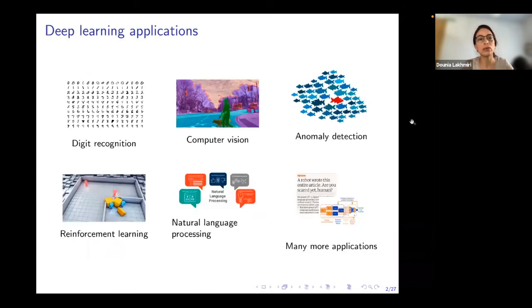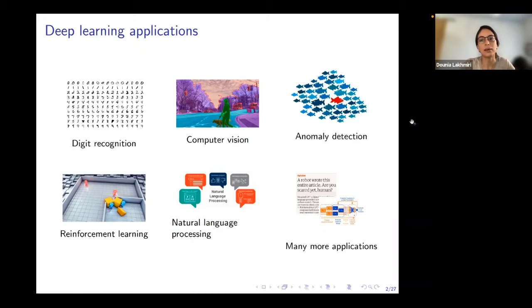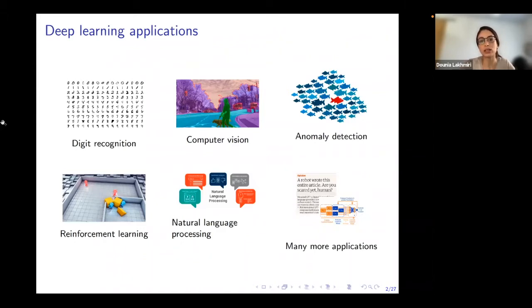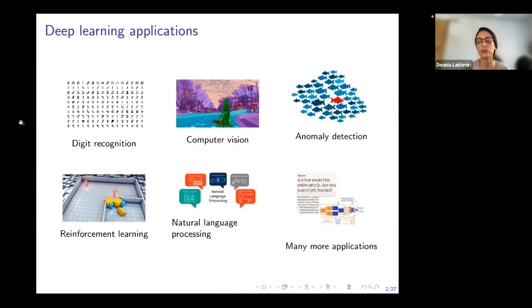Deep learning, as some of you may be familiar with, is a field that has been very active for the better part of the last two decades. It has tackled a variety of problems and has many applications. One of the first ones we can remember is handwritten digit recognition with the MNIST dataset. Deep learning then moved on to more complex applications such as computer vision — classifying images or doing image segmentation. We can also think of applications in anomaly detection, where the goal is to separate a small number of anomalous behaviors from a large number of normal data, for example in cybersecurity to detect network breaches.